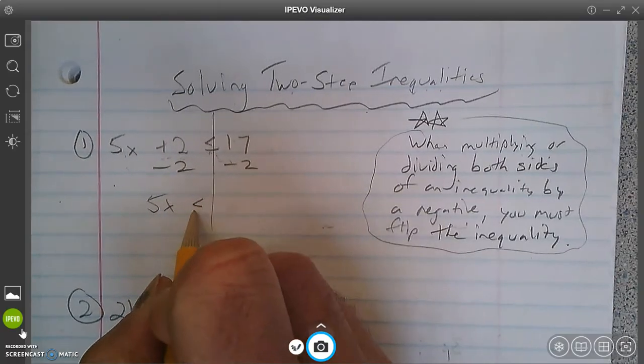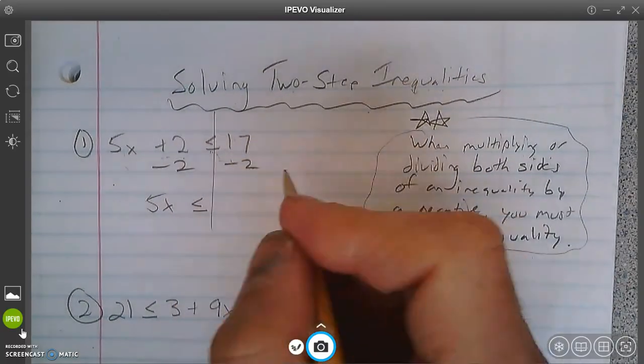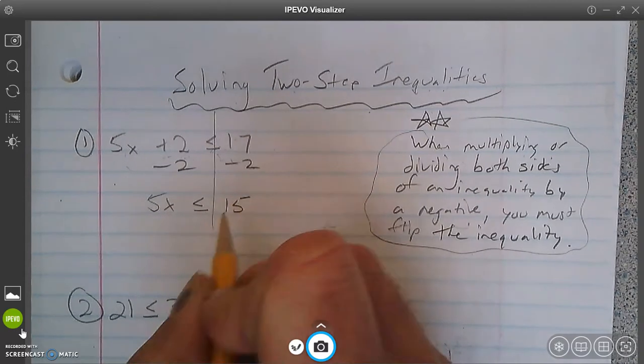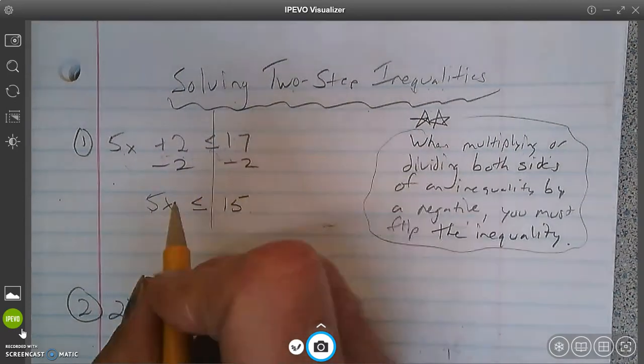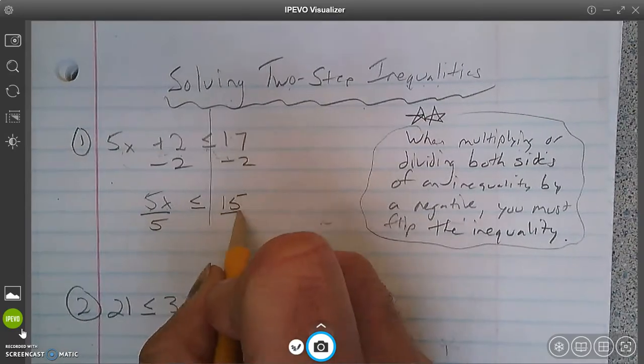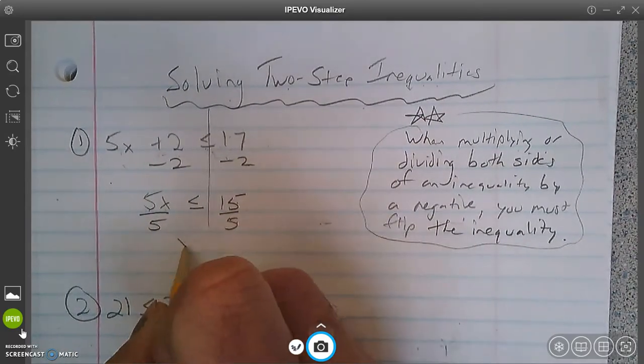5x is less than or equal to 17 minus 2, which is 15. 5 times what is 15? Yeah, you know. Same thing as 15 divided by 5.